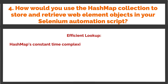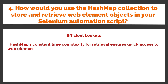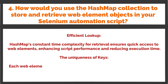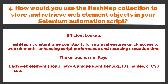Efficient lookup: HashMap's constant time complexity for retrieval ensures quick access to web elements, enhancing script performance and reducing execution time. Uniqueness of keys: Each web element should have a unique identifier — for example, IDs, names, or CSS selectors — to serve as keys. This ensures that the HashMap accurately represents the page structure.